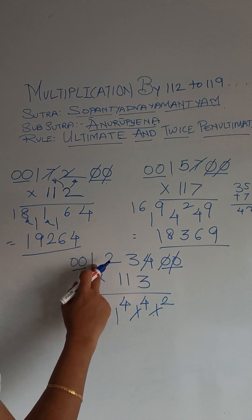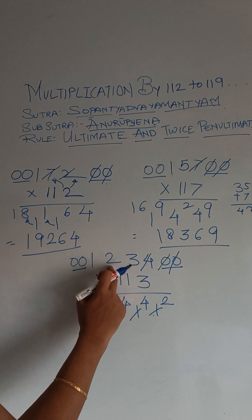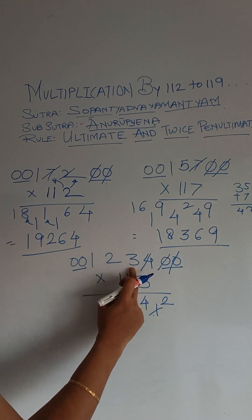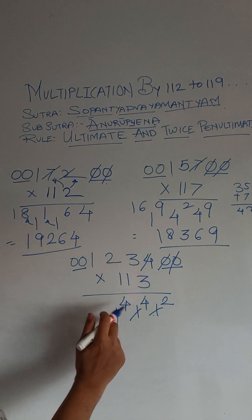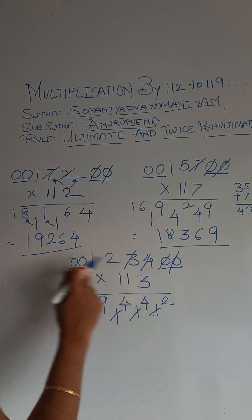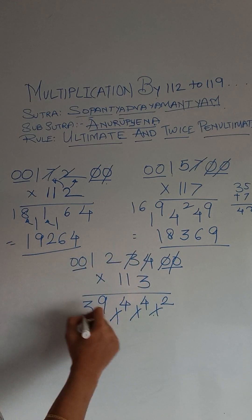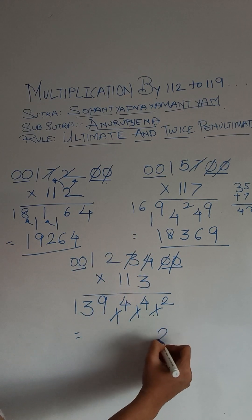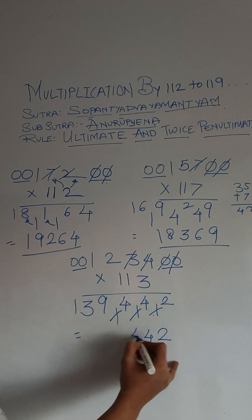3 ones are 3. 3 plus 2 is 5. Plus 3 is 8. 8 plus 1 is 9. Then we have got 1 plus 2 is 3. And then finally 1. So your final answer is...